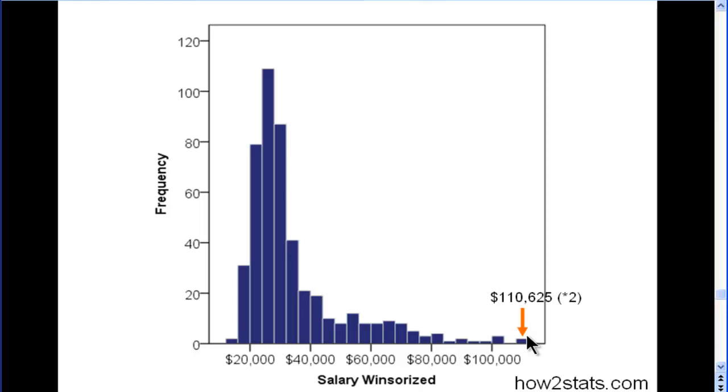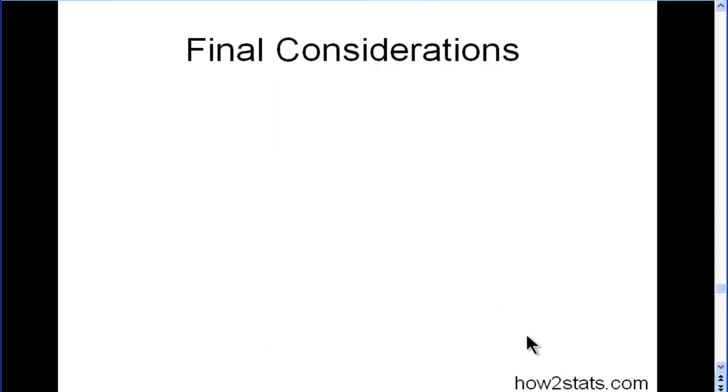And that's Winsorizing. It's really quite simple to do. And I suspect in the vast majority of cases when you've got an outlier, it's not because of some error, it's just the nature of the data. So you should Winsorize. It's a legitimate procedure that's been done in the past.